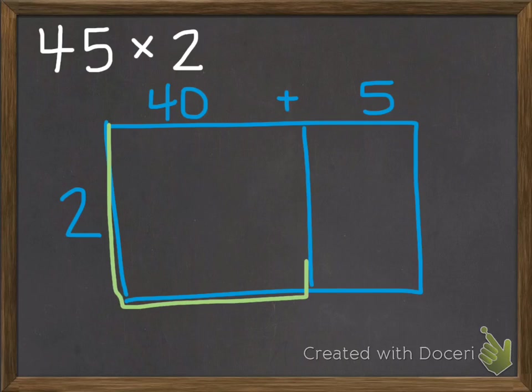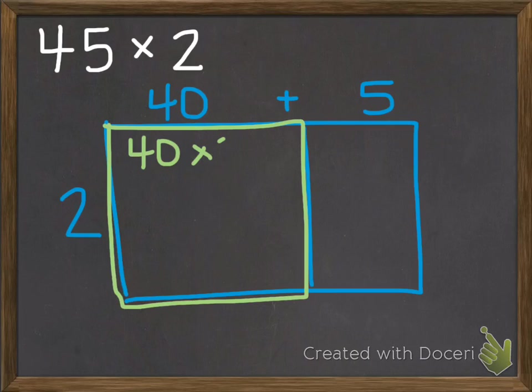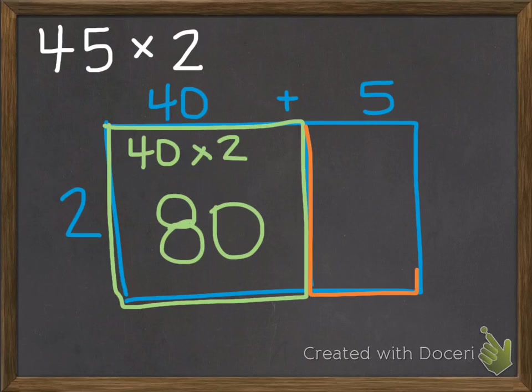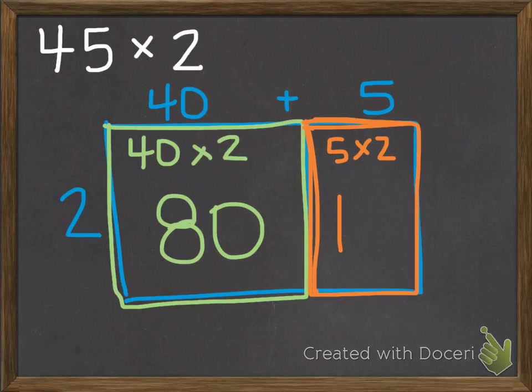So for the first part of my rectangle, this rectangle here, it's 40 by 2. I know that 40 times 2 is 80. Now I need to look at the second rectangle here. And it is 5 by 2. So 5 times 2 is 10.